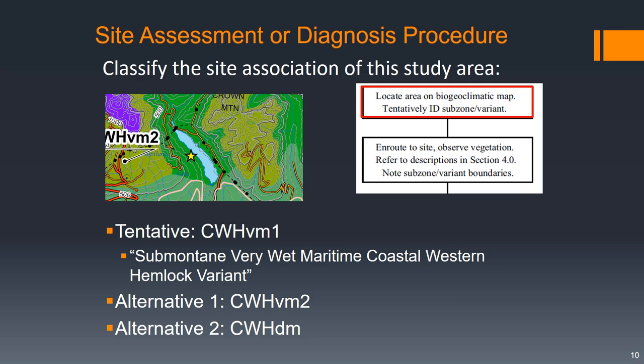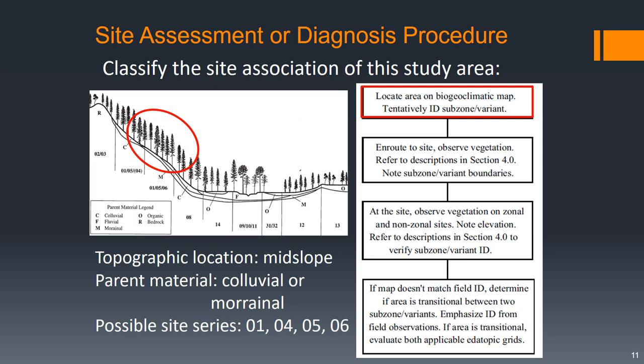We also want to think about where we are in the elevation profile. Here we're going to be on a mid-slope position, so probably colluvial or morenal parent material. Colluvial is material that's been deposited by erosion; morenal is a glacial deposit. So possible site series are probably one, four, five, or six — maybe a few others — but that gives us an idea of where we think we might be headed.